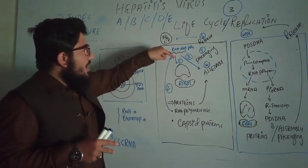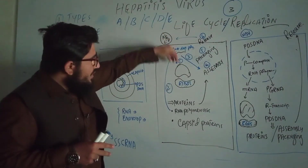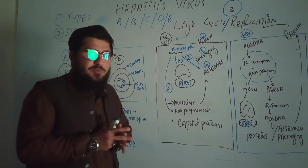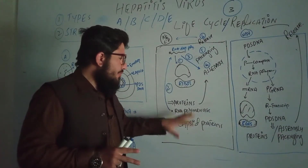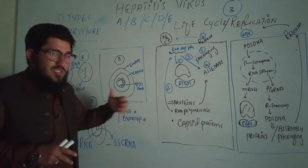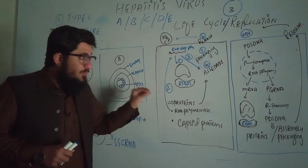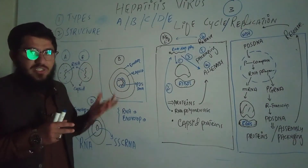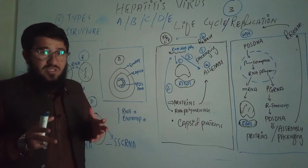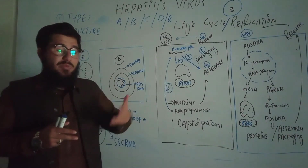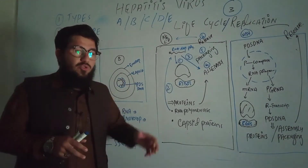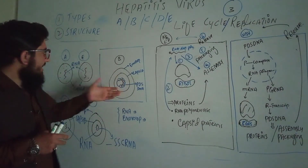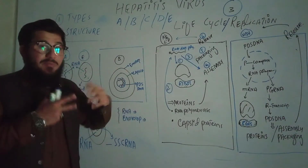Those RNA copies then come to the ribosomes, where they are translated into proteins. These proteins are of several types — RNA polymerases, capsid proteins, and others needed for the virus — just as discussed in earlier lectures on capsid proteins, vhs, vp16, etc.